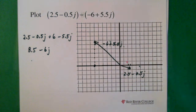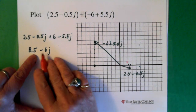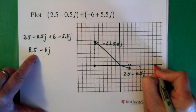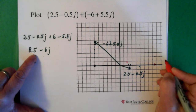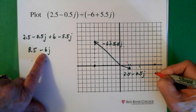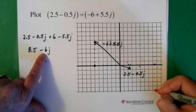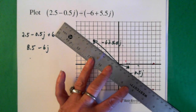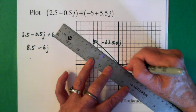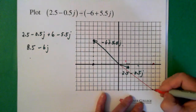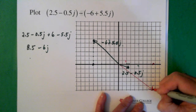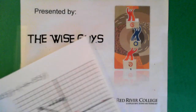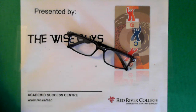So that's what we end up with when we subtract these two vectors — 8.5 minus 6j. So we have 1, 2, 3, 4, 5, 6, 7, 8.5 — we're right here. And then minus 6j: 1, 2, 3, 4, 5, 6 — right down here. And we end up with this. So there's your final vector: 8.5 minus 6j. And that has been brought to you by Wise Guys. I hope you have a super day — take care of yourself.